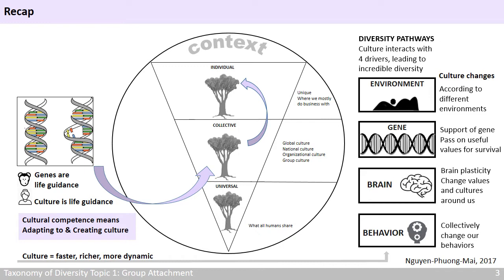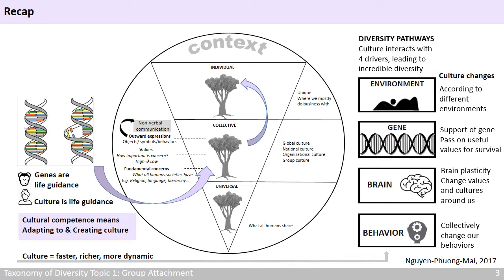We can compare culture with a tree. The trunk represents fundamental concerns, such as religion, language, or hierarchy — they are the building blocks of culture that all societies need. The branches represent values: we identify a value by asking how important is this concern — high, low, or moderate? The canopy represents outward expressions with specific objects, symbols, and behaviors. Part of the outward expression is nonverbal communication — we use time, space, and body language to communicate, judge, and create our identities, relying on these nonverbal cues at a high or low level.